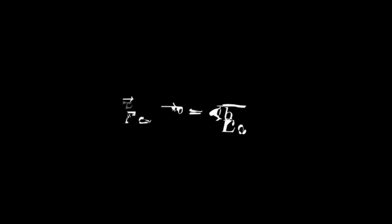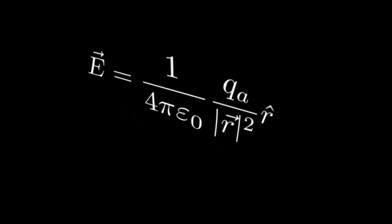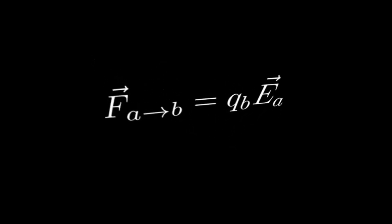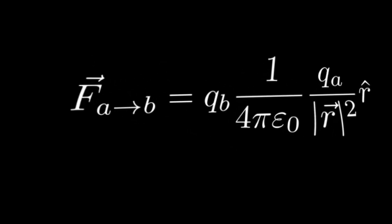Working backwards, we can describe this as the Coulomb force over the charge of B. This gives us a new equation for the electric field of particle A. We can check and see that it is consistent with a previous definition for force.